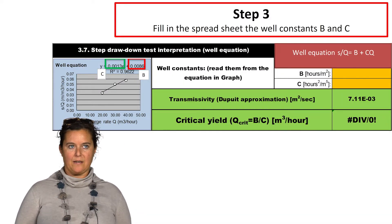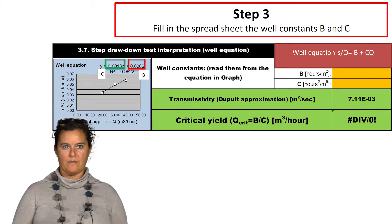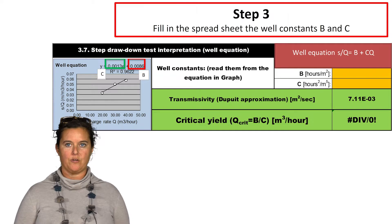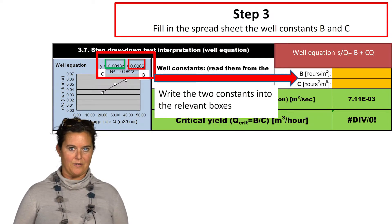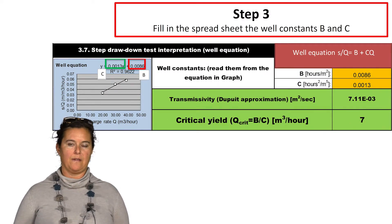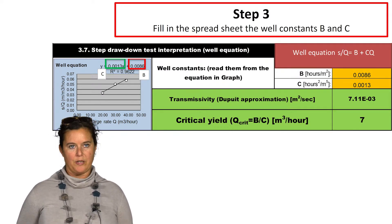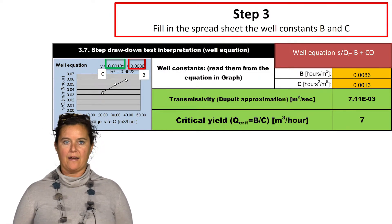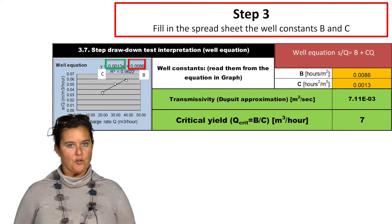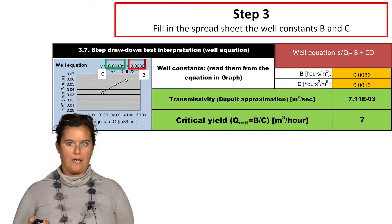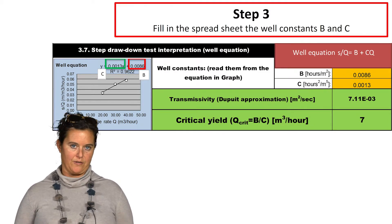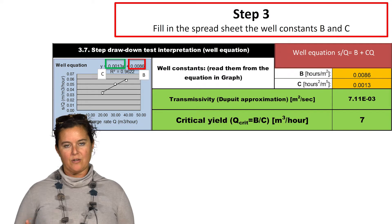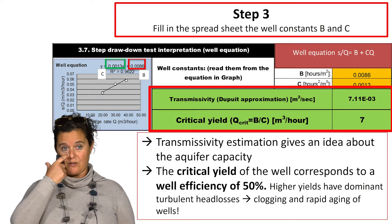After that, we will manually enter the well constants b and c from the well equation — though in a later version of the tool this will come automatically. With b and c, the well equation will be solved, giving the transmissivity, which represents the aquifer capacity, and the critical yield, which corresponds to a well efficiency of 50%. If the pumping rate is higher than the critical yield, this may cause turbulent head losses, clogging, and rapid aging of the well.